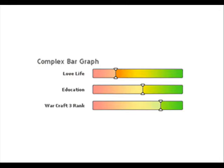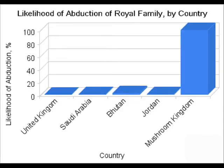Here we have a complex bar graph. From this graph we can determine that the subject has a low love life measurement, a seemingly average education, and an unusually high rank in Warcraft. Ponderous. Finally, we have the standard bar graph. Also handy for comparing variables, this graph depicts the percent likelihood of an abduction which targets the royal family of a given country.